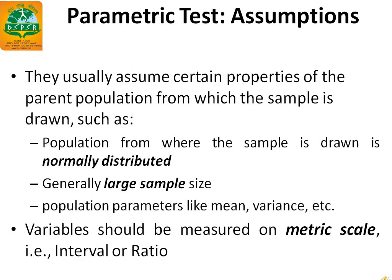Let us discuss the assumptions for parametric tests. Parametric tests usually assume certain properties of the parent population from which the sample is drawn, such as: the population from where the sample is drawn is normally distributed, the sample size has to be large enough, and they are based upon population parameters like mean, variance, etc. Variables should be measured on metric scale, also known as interval or ratio scale.